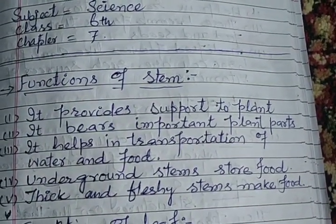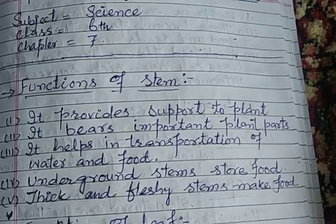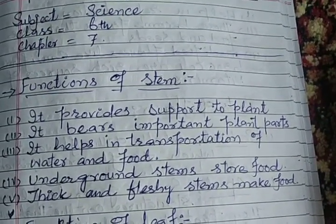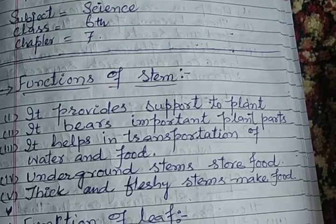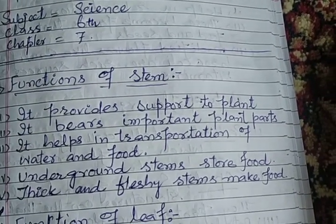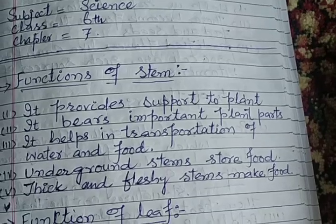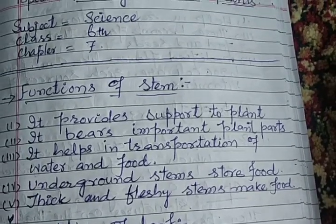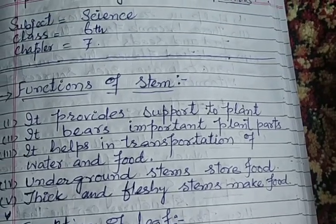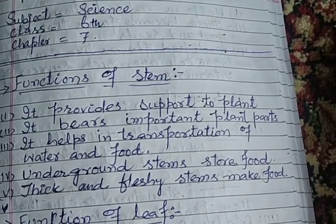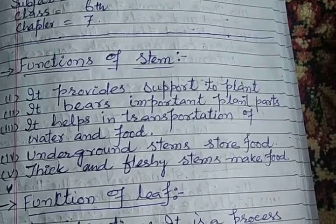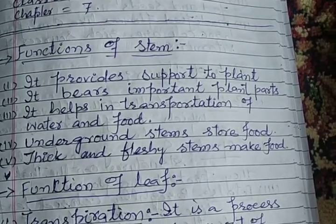Roots provide support for the plant. The stem bears important plant parts such as branches, leaves, and flowers. The stem also helps in transportation of water and food.